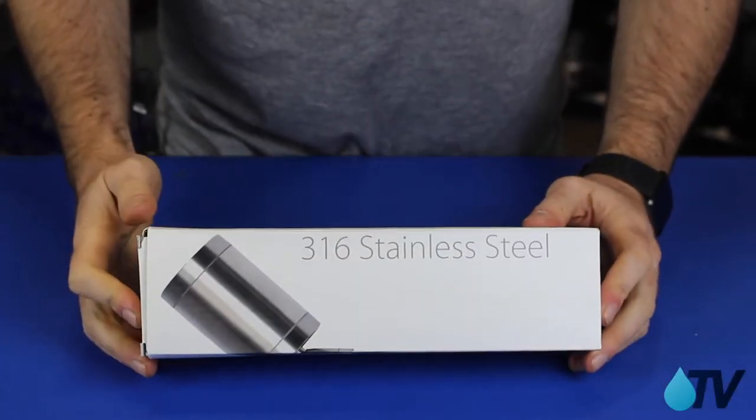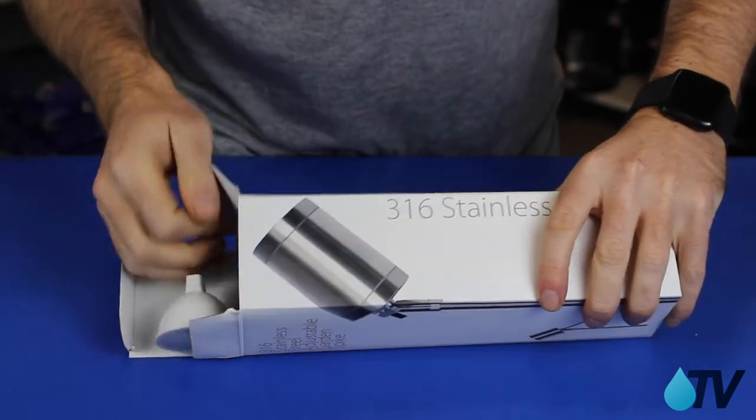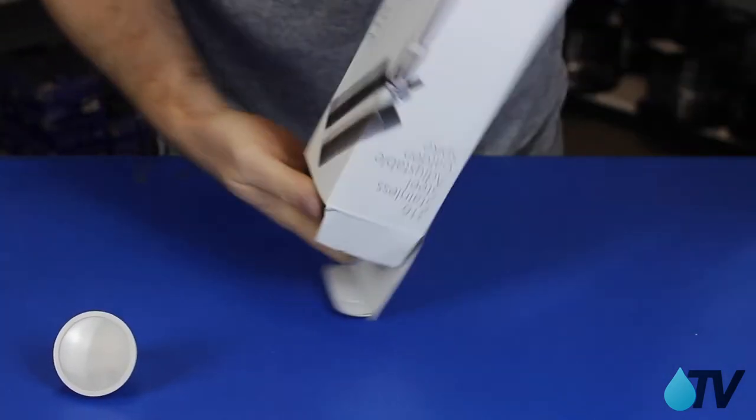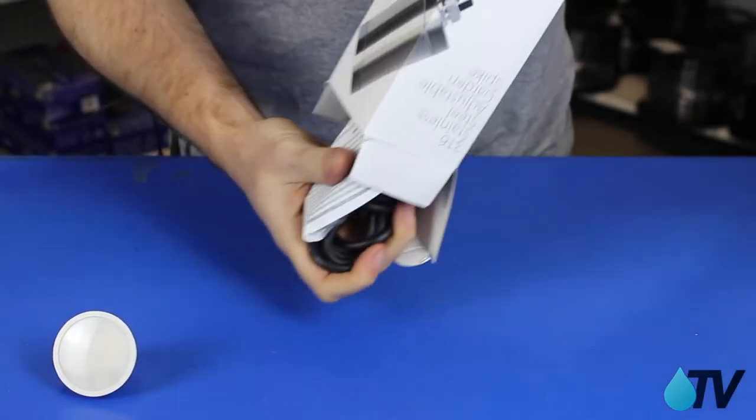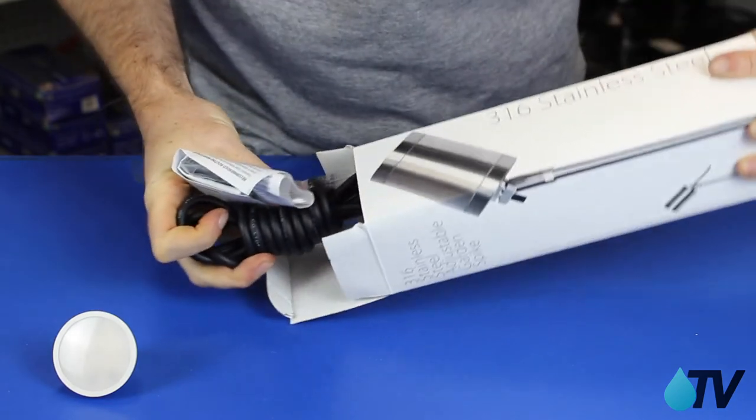Here we have the Havit Eden light, 316 stainless steel, so it's going to last in those salt-filled areas or near the beach because salt can get into plenty of different materials and affect them in the long term. Let's have a look inside.